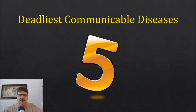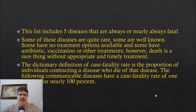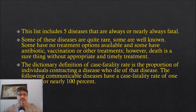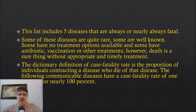The five deadliest communicable diseases. This list includes five diseases that are always or nearly always fatal. Some of these diseases are quite rare, some are well known, some have no treatment options available, and some have antibiotics, vaccination, and other treatments. However, death is a sure thing without appropriate and timely treatment. The dictionary definition of case fatality rate is the proportion of individuals contracting a disease who die of that disease. The following communicable diseases have a case fatality rate of 100 or nearly 100%.